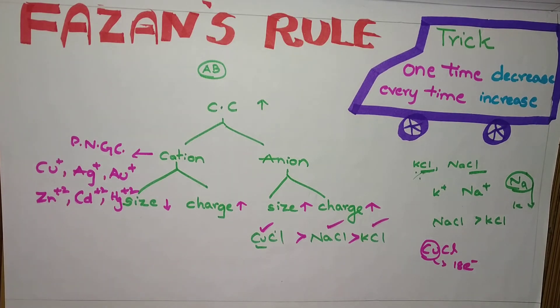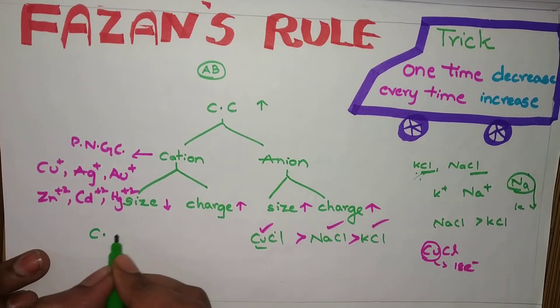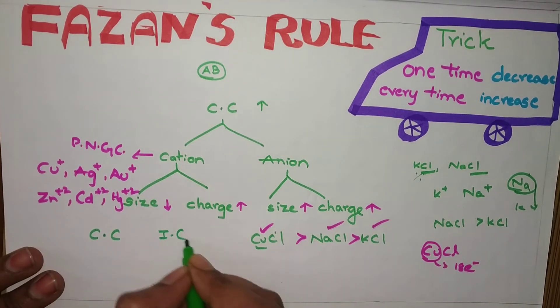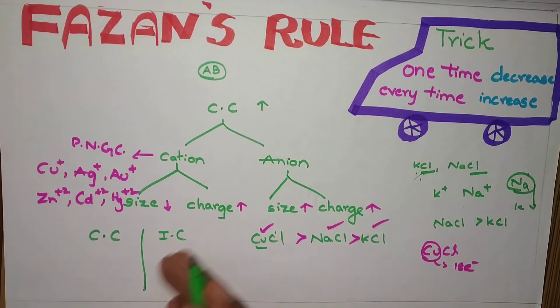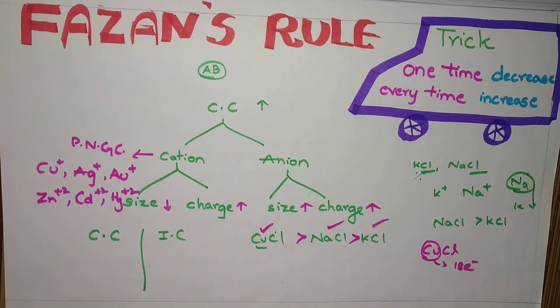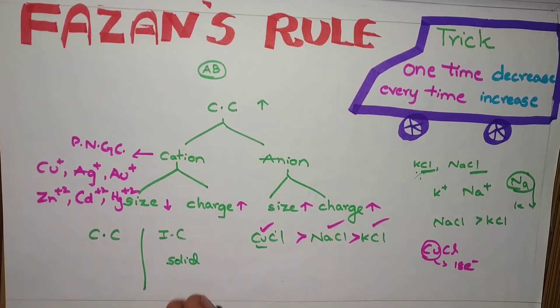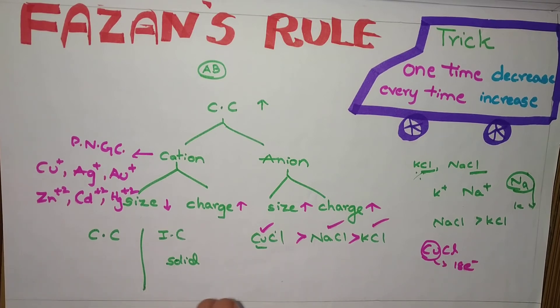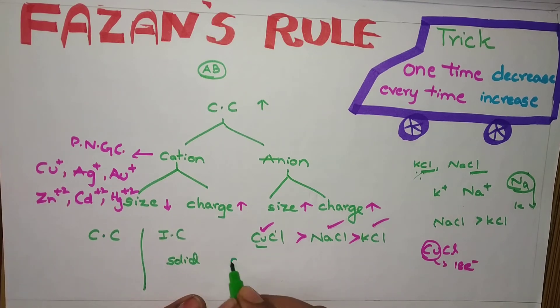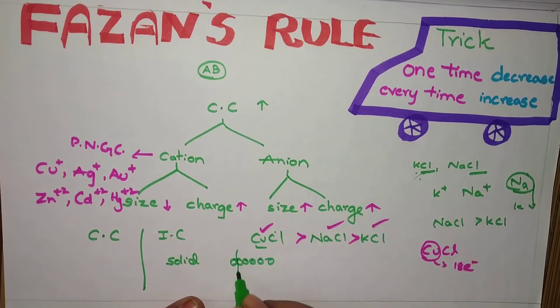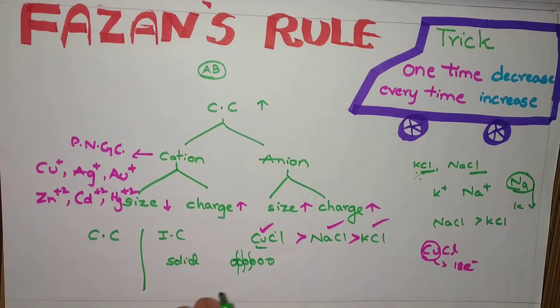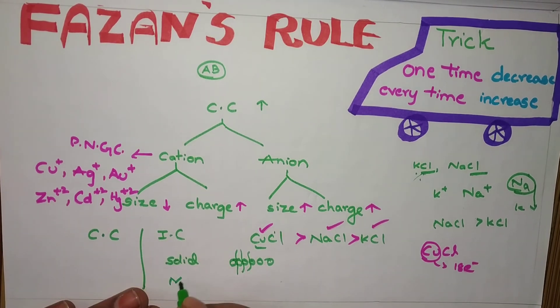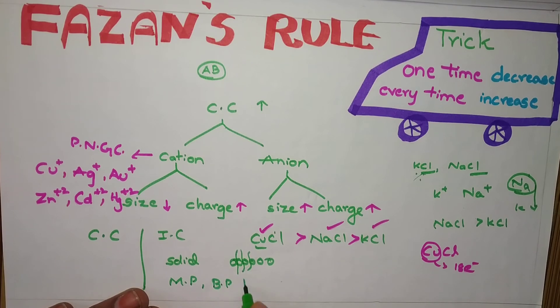I want to say one thing. That is covalent character and ionic character. If ionic character is there, it means it is in solid state. If solid state, melting points and boiling points will be high. Because we have to break them. In solid, the atoms will be so close that we cannot break easily. To break this, we have to give more temperature. So for ionic character, melting point and boiling point will be higher.